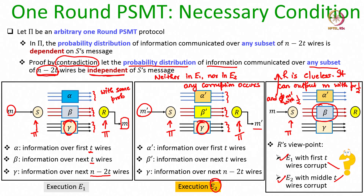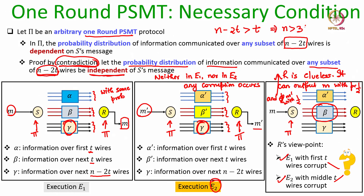This shows that the contradictory statement we assumed is incorrect, and therefore the probability distribution over any subset of N minus 2T wires in any one round PSMT protocol must depend on the sender's message. As a result the condition N minus 2T strictly greater than T must hold, implying N greater than 3T.